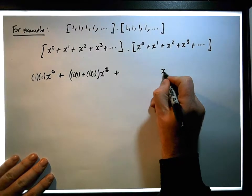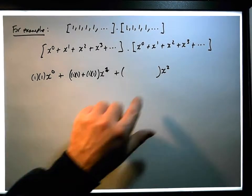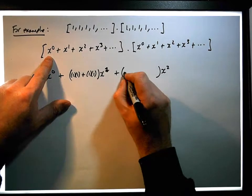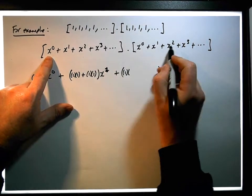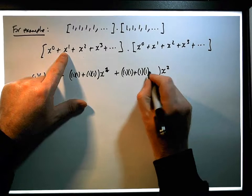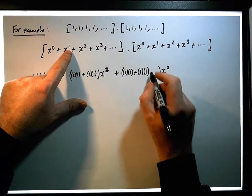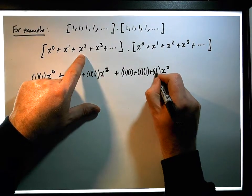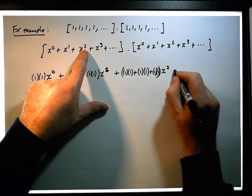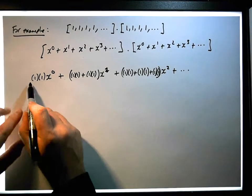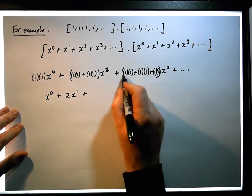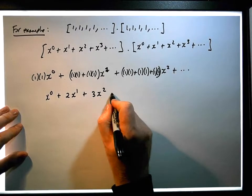The coefficient associated with the x squared term — keep in mind that the indices must add to give us 2 — so we're going to have the coefficient of x^0, which is 1, times the coefficient of x^2, which is 1, plus the coefficient of x^1, which is 1, times the coefficient of x^1, which is 1, plus the coefficient of x^2, which is 1, times the coefficient of x^0, because 2 plus 0 gives us 2, which is also 1. So: 1 times 1 is 1, giving us x^0; plus 1 plus 1 gives us 2x^1; plus 1 plus 1 plus 1 gives us 3x^2, plus dot dot dot.